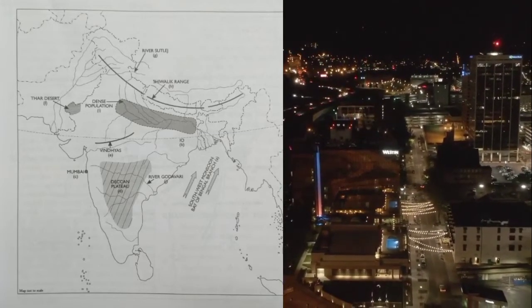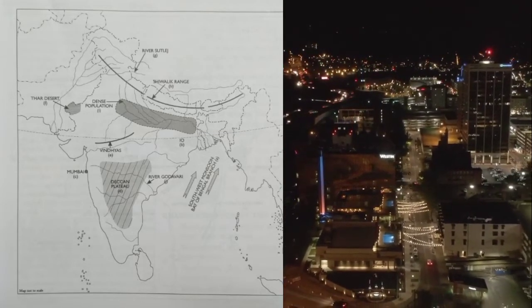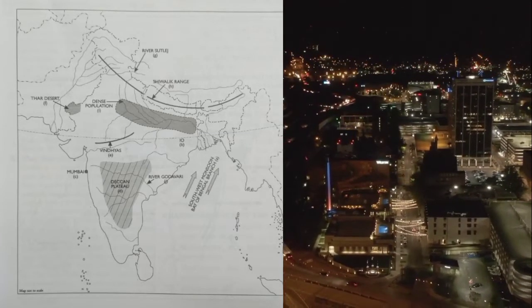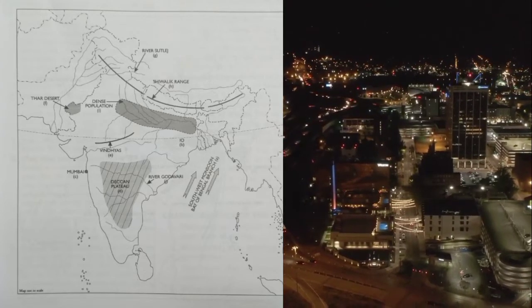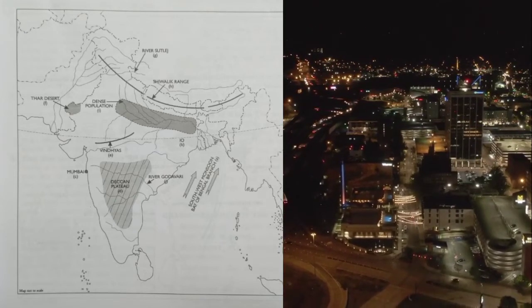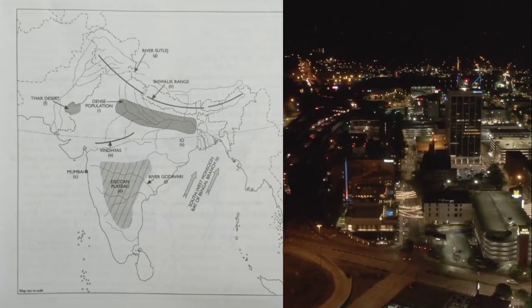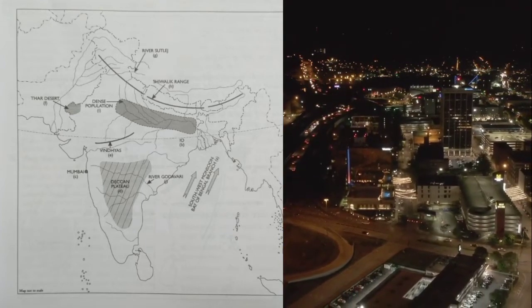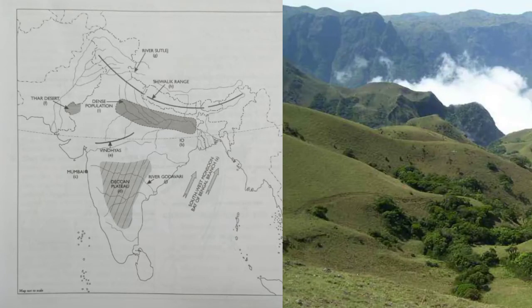Next map on the outline map of the Indian subcontinent: mark with a bold arrow and name the winds which bring summer rain — southwest monsoon — to Mawsynram. 'A' represents the summer rain for Mawsynram.